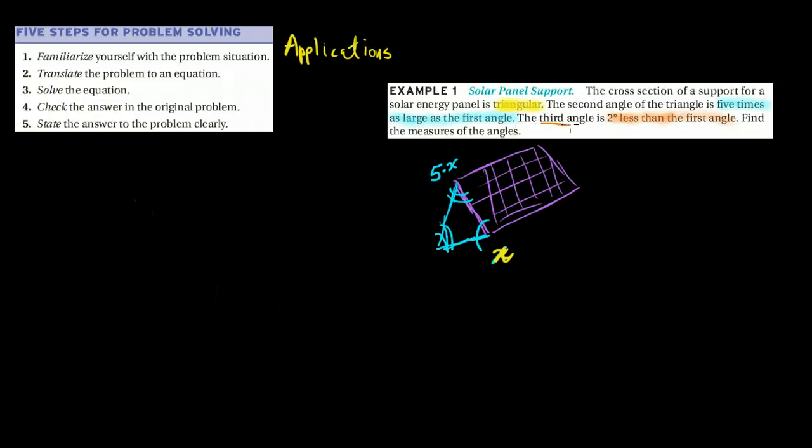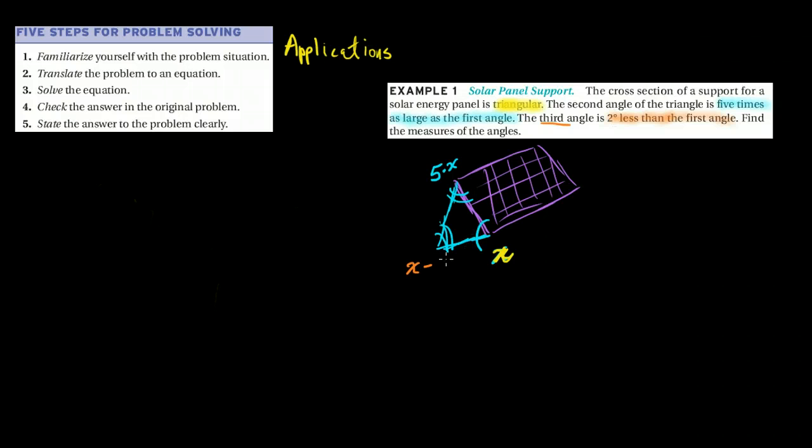And our third angle is here. The third angle is two degrees less than the first angle. Okay, well, the first angle is x. So the second angle, I mean, the third angle is x minus two. And here is where now we've used our critical thinking to build a model, and now we need to bring in some previous knowledge that we have.